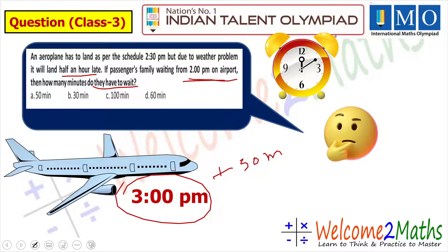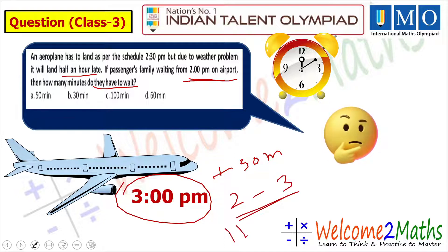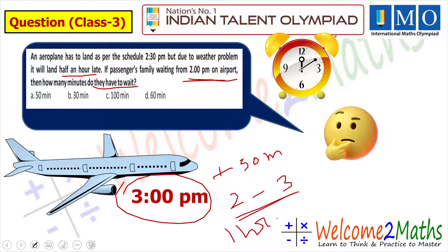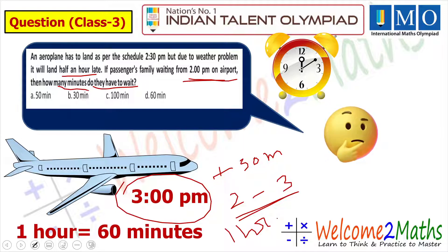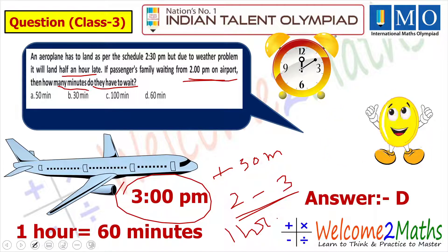From 2 pm to 3 pm is 1 hour, so the family has to wait 1 hour for the flight. But the question asks for minutes, and 1 hour equals 60 minutes. So the answer is 60 minutes. Looking at the four options A, B, C, D — Option D is the correct one.